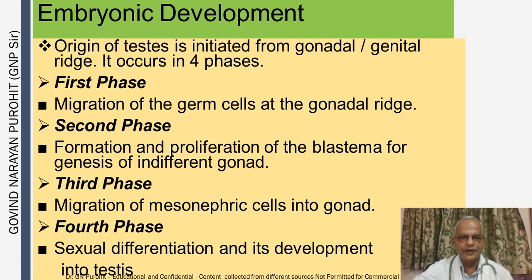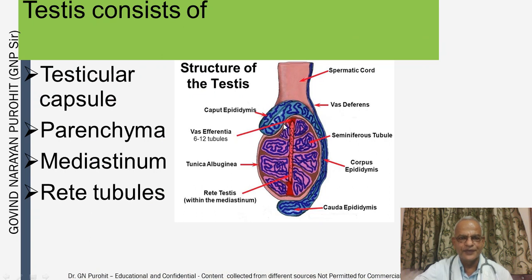The embryonic development of the testes originates from the gonadal genital ridge and occurs in four phases. Phase 1: migration of germ cells to the gonadal ridge. Phase 2: formation and proliferation of the blastolema for genesis of the indifferent gonad. Phase 3: migration of mesonephric cells into the gonad. Phase 4: sexual differentiation and development into testes. The testes consist of the testicular capsule, parenchyma, mediastinum, rete tubules, spermatic cord, vas deferens, seminiferous tubules, corpus epididymis, cauda epididymis, rete testis, and vas efferentia.